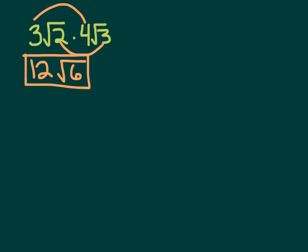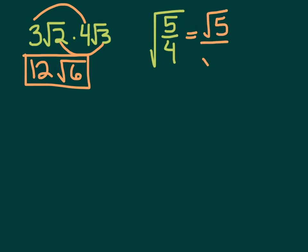Let's simplify the square root of 5 fourths. When you've got a fraction under a radical, you can split it up into the radical of the top over the radical of the bottom. Since this one has a perfect square on the bottom, that's the square root of 5 over 2.